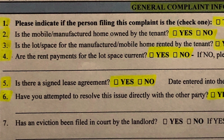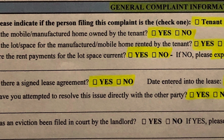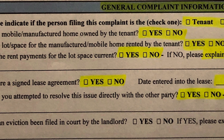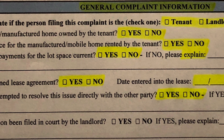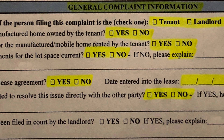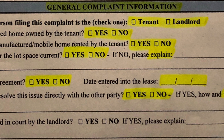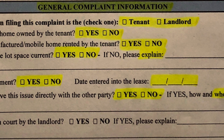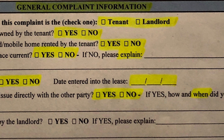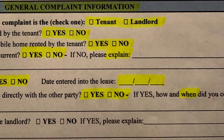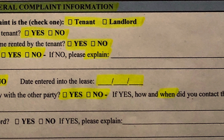Number six: have you attempted to resolve this issue directly with the other party? Mark yes or no. If yes, how and when did you contact them? Some folks haven't directly contacted their landlord, but for Hearst Parks the Leisure Manor Tenants Association has contacted Hearst & Son. So you can mark yes and put in LMTA for Leisure Manor Tenants Association, February of 2022. If you're in a different park by a different owner, you would have to put a date and statement of whether you've tried to resolve your issues with your local manager or owner.